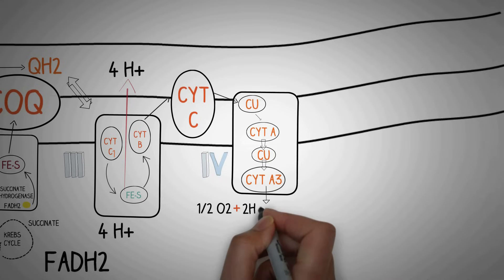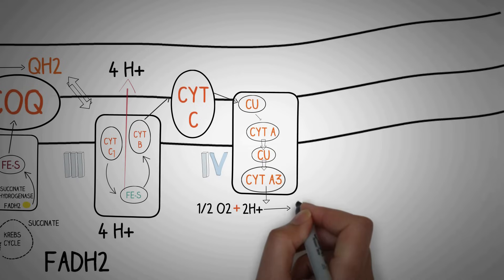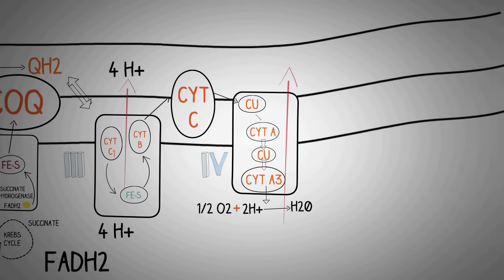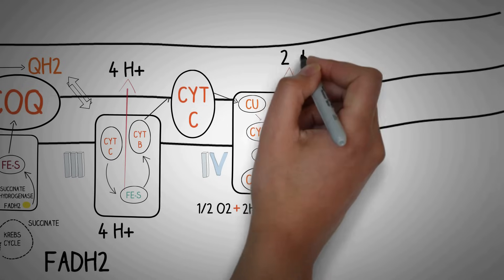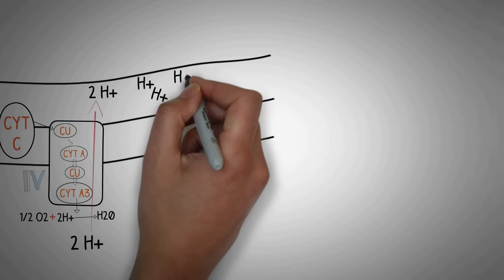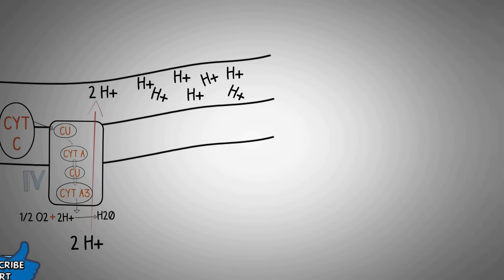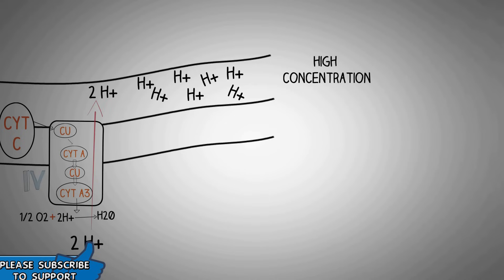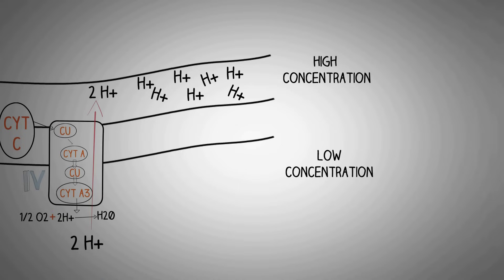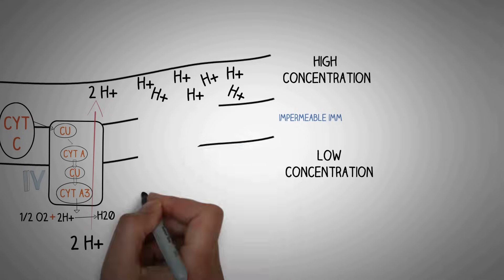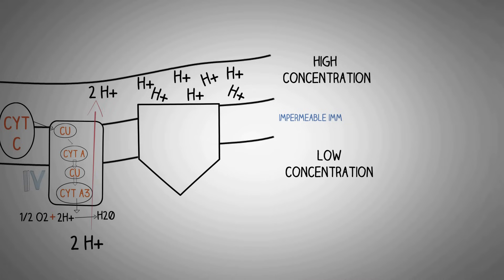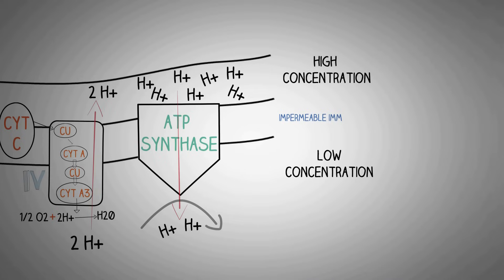Cytochrome a3 in the final step donates the electrons to the final electron acceptor, which is oxygen. The oxygen combines with two hydrogen ions from the matrix of the mitochondria and gets reduced to water. These redox reactions in the fourth complex cause the pumping of two hydrogen ions to the inter membrane space. All this pumping of hydrogen ions creates a higher concentration in the inter membrane space compared to the low concentration inside the matrix. Since the inner mitochondrial membrane is impermeable to ions, hydrogen ions cannot cross the membrane, which is where the enzyme ATP synthase plays its role.